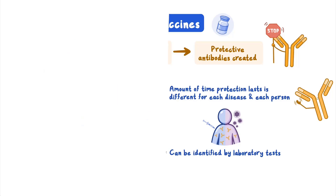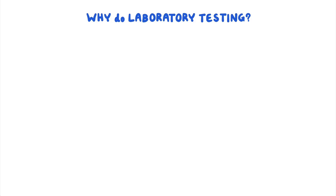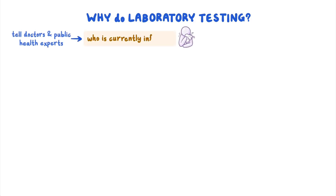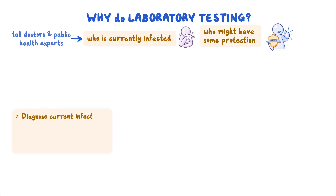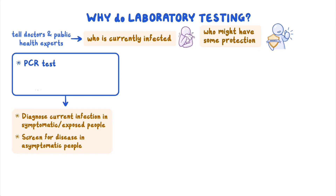As a quick recap, we can now answer the question: why do laboratory testing? Laboratory tests can tell doctors and public health experts who is currently infected with an agent and who might have some protection against the agent due to past infection or vaccination. Laboratory testing can be used to diagnose a current infection in symptomatic or exposed people, or to screen for disease in asymptomatic people. PCR tests check for the presence of infectious agents by looking for the agent's genetic material, while antigen tests use antigens to identify the agent.